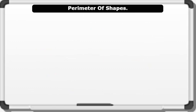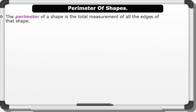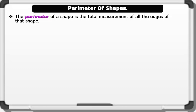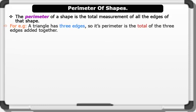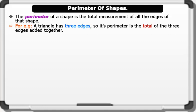Perimeter of shapes. The perimeter of a shape is the total measurement of all the edges of that shape. For example, a triangle has three edges, so its perimeter is the total of the three edges added together.